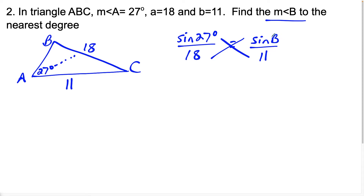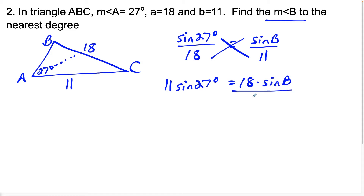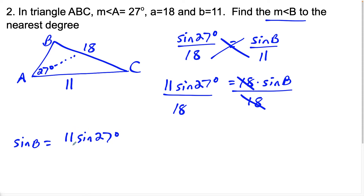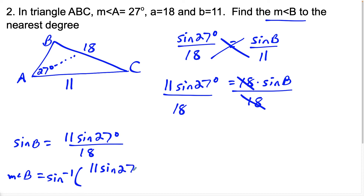To solve for angle B, we cross-multiply to get 11 times sine 27 degrees equals 18 times sine of B, then divide both sides by 18. That gives sine of B equals 11 sine 27 degrees over 18. Applying sine inverse, the measure of angle B equals sine inverse of 11 sine 27 degrees over 18. Make sure you're in degree mode, and you should get 16.1 degrees.